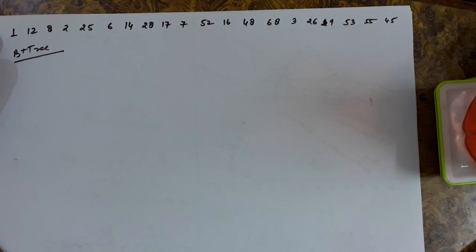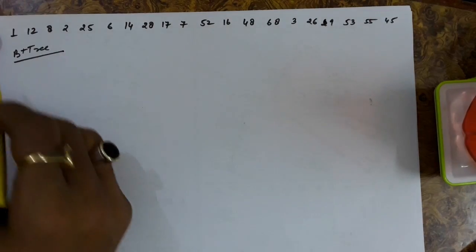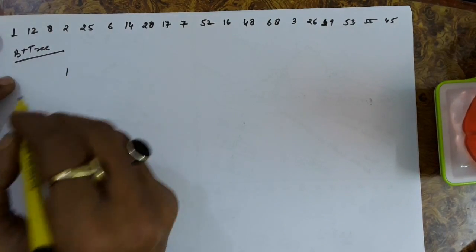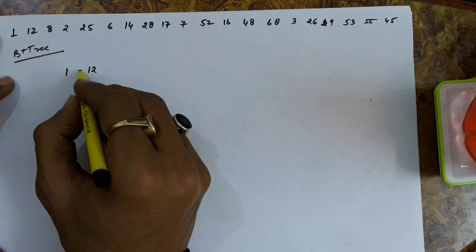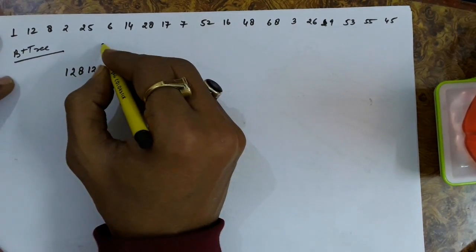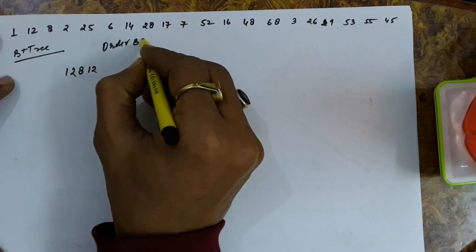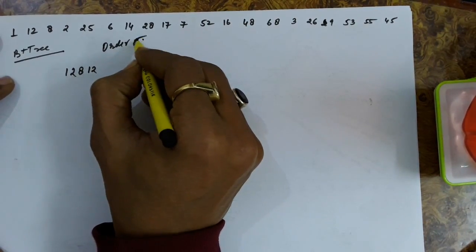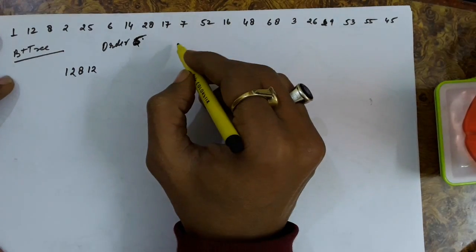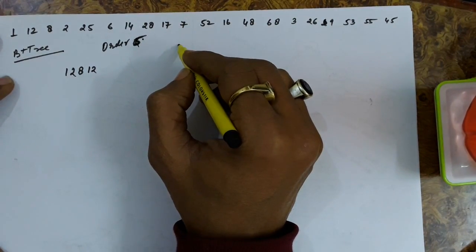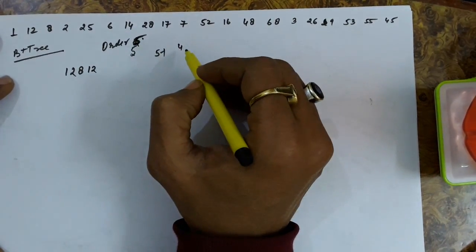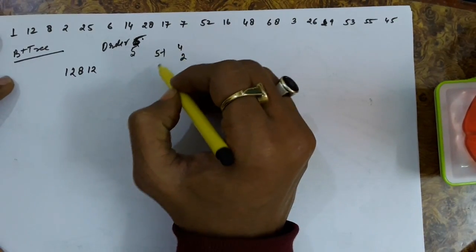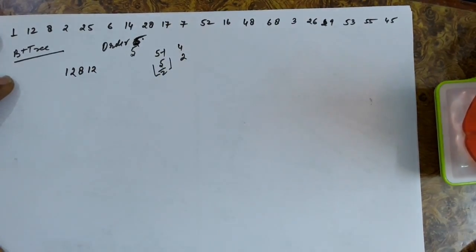Let's take another example to explain the B+ tree. The keys required to be inserted are 1, 12, 8, 2, and others. We are building an order 5 B+ tree. For order 5, the maximum number of keys a node can have is 4 (which is 5 minus 1), and the minimum number of keys is 2 (lower bound of 5 divided by 2).